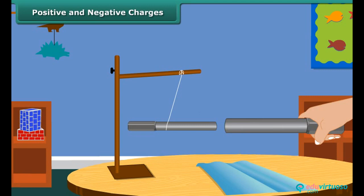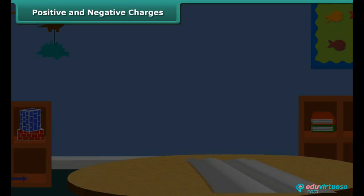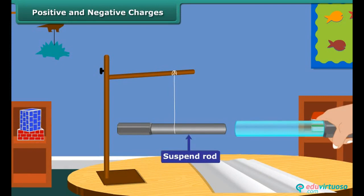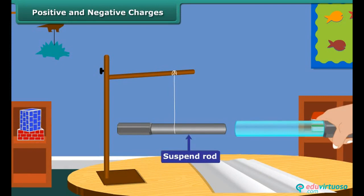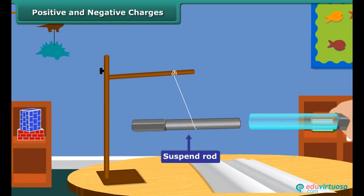Now take a glass rod and rub it with a silk cloth. Bring this glass rod close to the charged suspended ebonite rod. What do you observe now? The suspended ebonite rod comes closer to the glass rod.